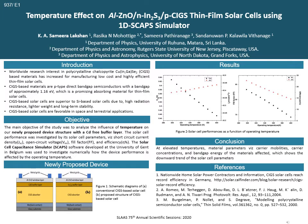Figure 1 shows the schematic diagram of the conventional CIGS based solar cell structure. In this simulation, we replace the cadmium sulphide buffer layer with indium sulphide. Solar cell capacitance simulator SCAPS software is used to investigate numerically how the device performance is affected by operating temperature. This 1D SCAPS software is developed at the University of Ghent, Belgium, and its function is based on fundamental semiconductor equations: the Poisson equation and the continuity equation.